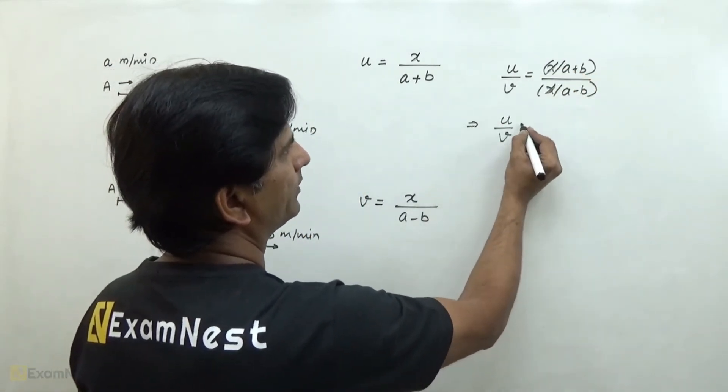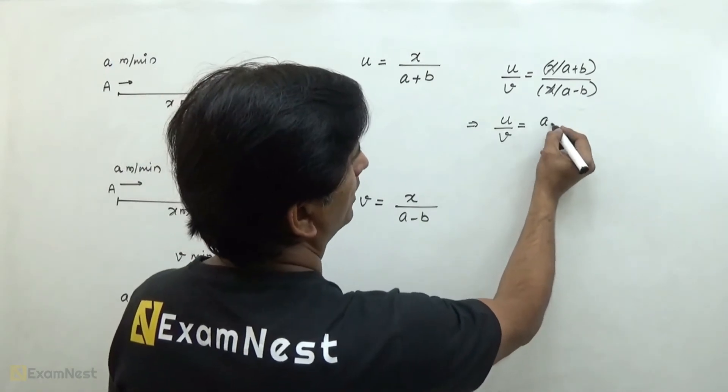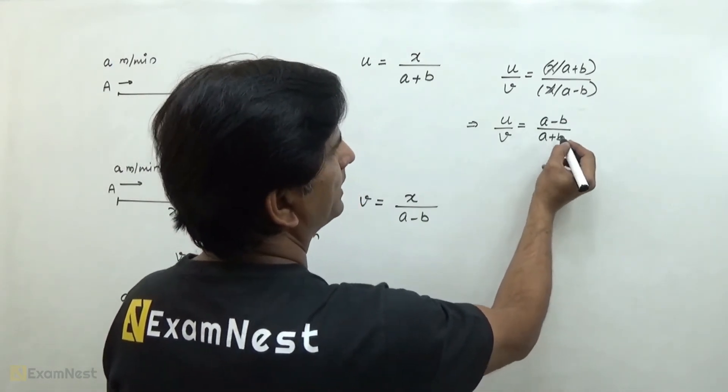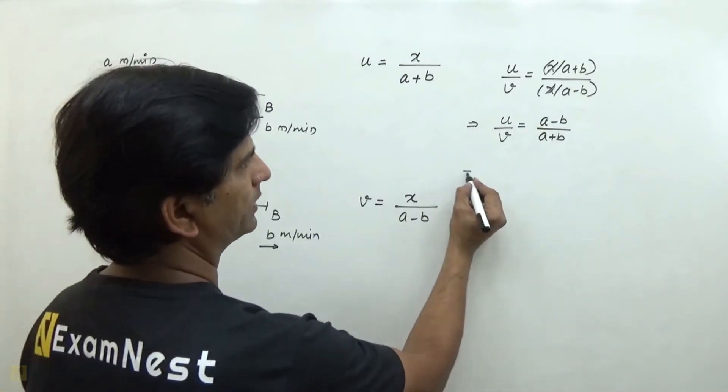So u over v is equal to (a minus b) over (a plus b). Further solve it.